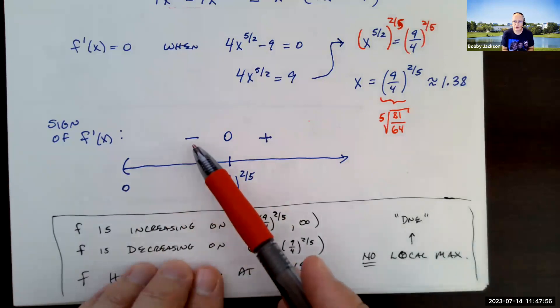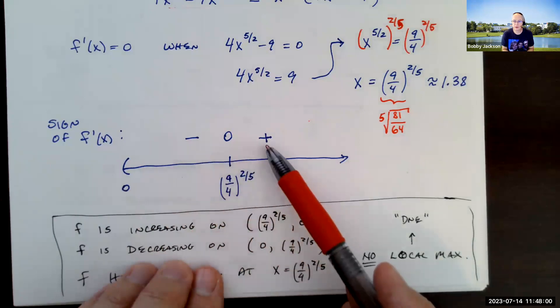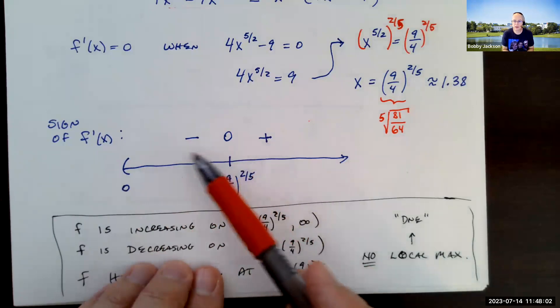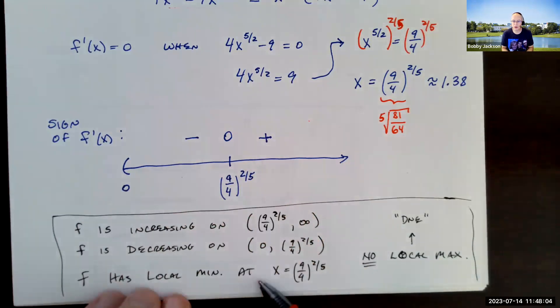And then since we change from negative, which is meaning the function is decreasing, to a derivative that's positive, which means it's increasing. Decreasing to increasing means we have a local min. That's the first derivative test. There's no local maximum. I think Achieve wants you to put DNE for that.